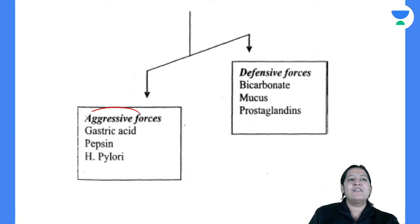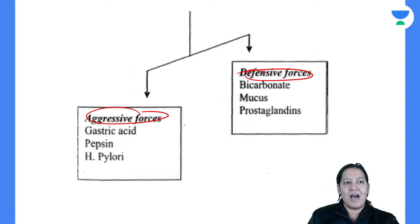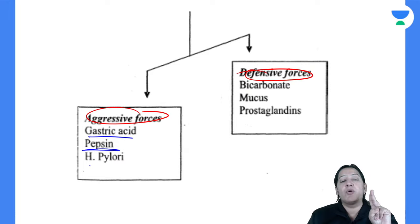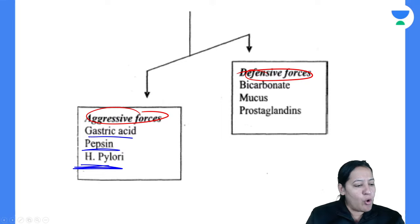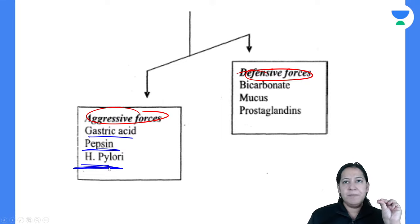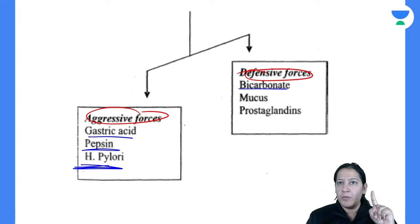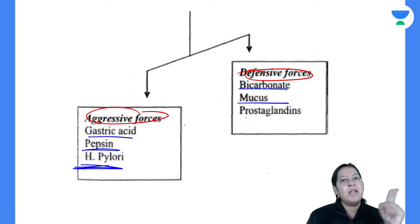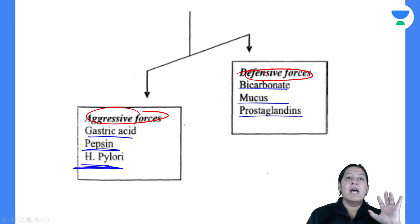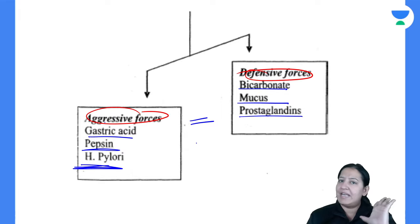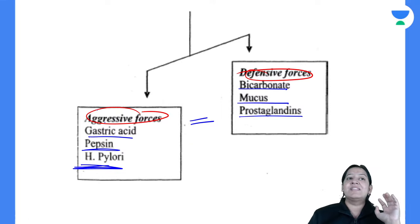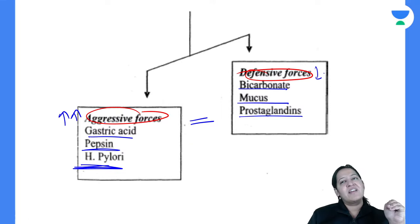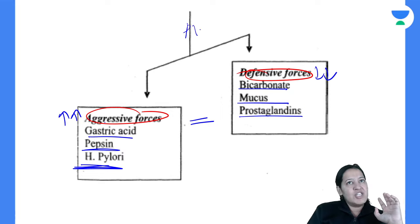In etiology there are aggressive (damaging) factors and defensive (protective) factors. Aggressive factors are HCL, pepsin enzyme, and H. pylori — a gram-negative cocobacillus — all of which cause a breach in the mucosa. Defensive factors include bicarbonate layer, mucus layer, and prostaglandin. In the normal human stomach both are equal and opposite and cancel each other. But whenever aggressive factors increase or defensive factors decrease, it leads to peptic ulcer. That is the etiology.